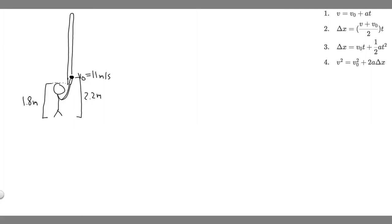In this problem, we're told a very strong but inept shot putter puts the shot straight up vertically with an initial velocity of 11 meters per second. How long does he have to get out of the way if the shot was released at a height of 2.2 meters and he is 1.8 meters tall?